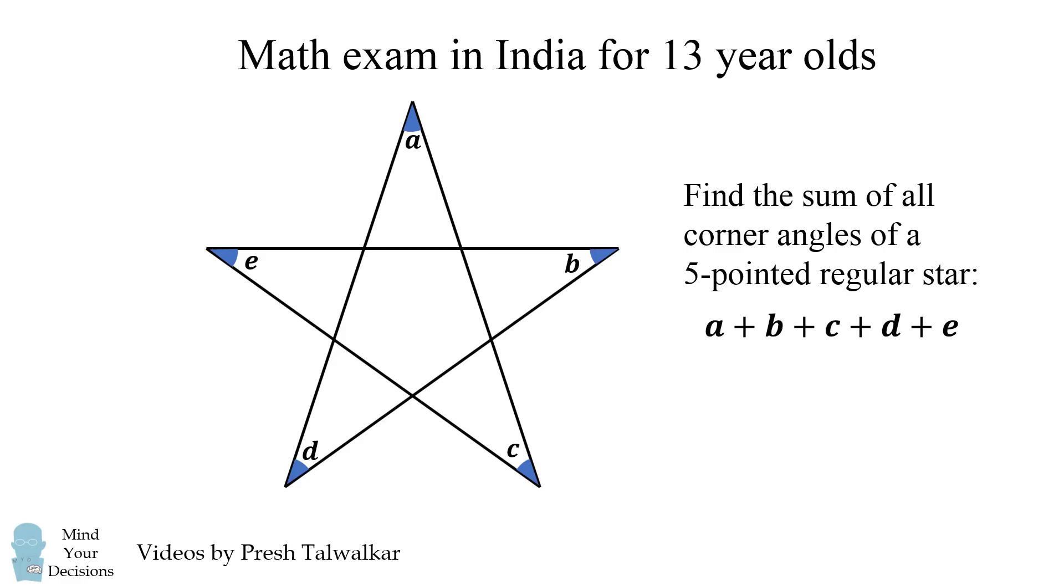Find the sum of all corner angles of a five-pointed regular star. That is, find the sum of A, B, C, D, and E. I thank Nikhil Patro for suggesting this problem.